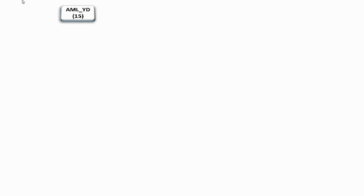Now let's see the tree structure to illustrate the working of the algorithm. Initially, all the different characters present in the string are grouped together and the total length is recorded. This is split into two branches — branch 0 and branch 1. Branch 0 contains character A with a count of six, and branch 1 contains the remaining characters M, L, space, Y, and D, which have a total count of nine.